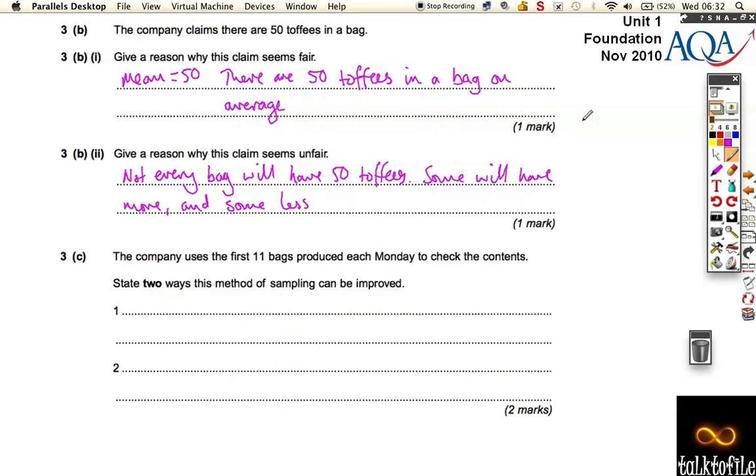So it seems fair on one hand, because they did the calculation, and on average, there was 50. But the problem with the average means that you might have some that are more, and some that are less.